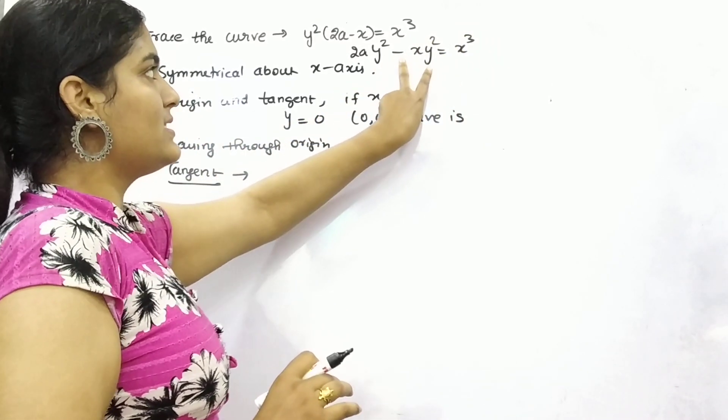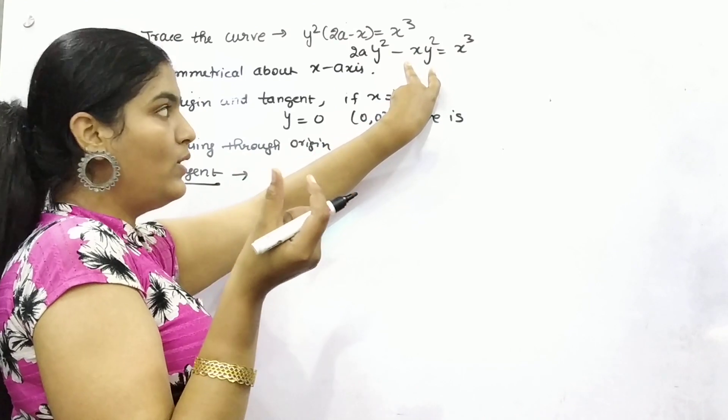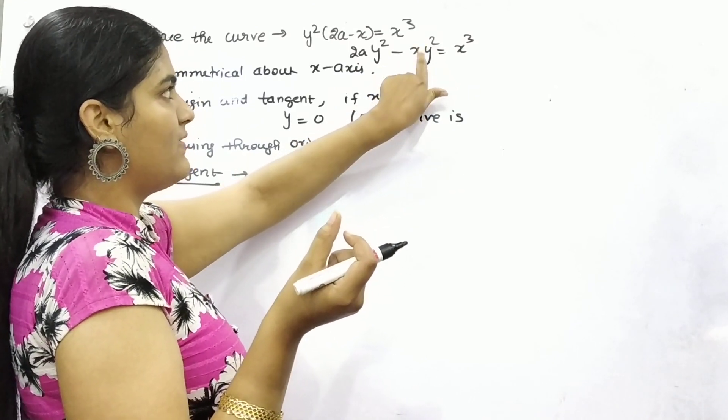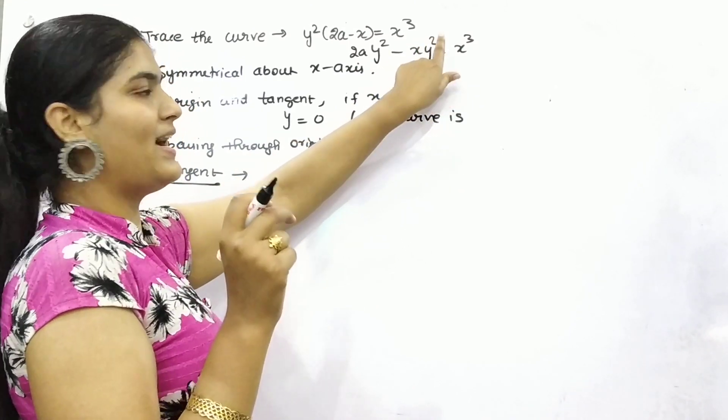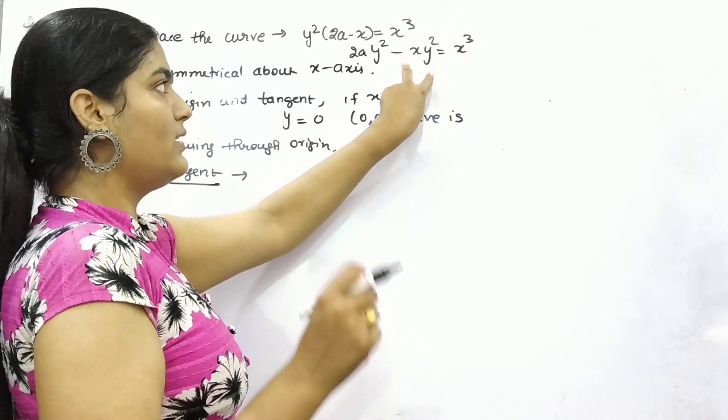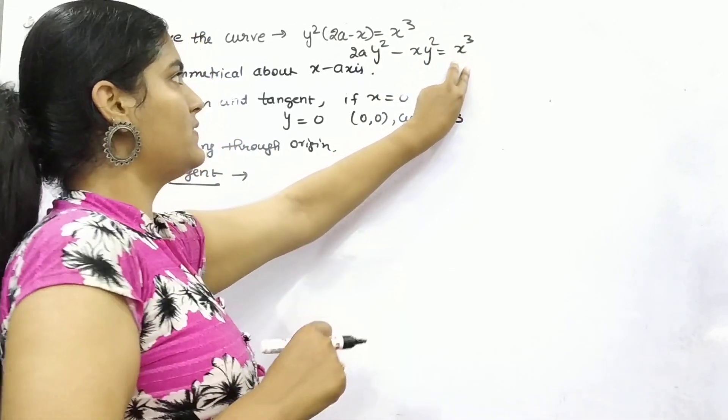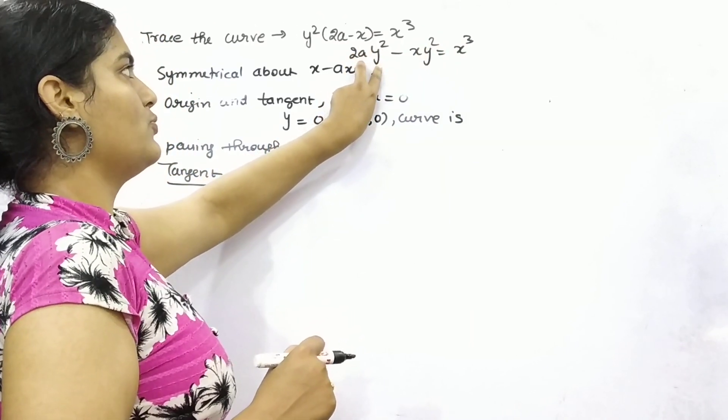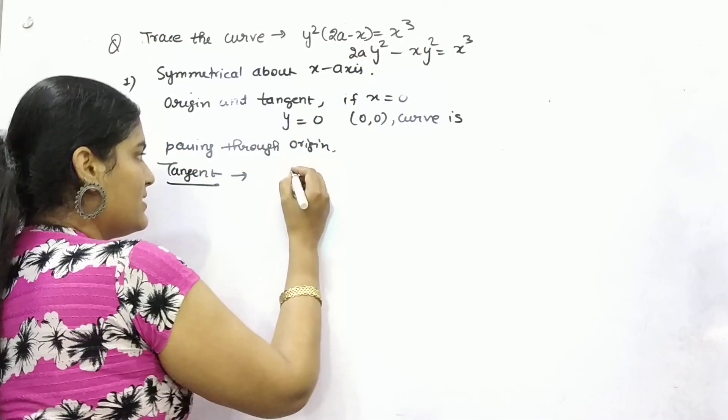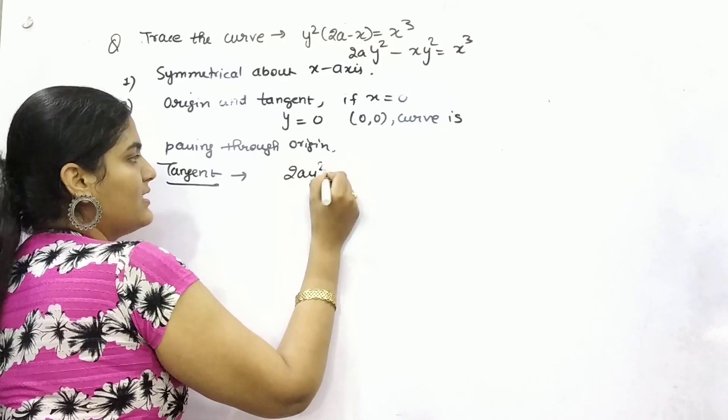Your lowest degree, you can see that this whole term, power of x is 1 and y is 2. So total degree of this term is 3. This is of 3 degree and this is of 2. So that's why lowest term is 2ay². Put it as 0.